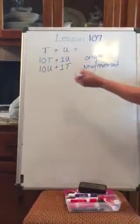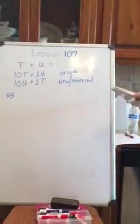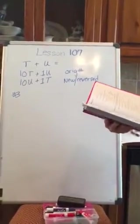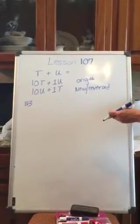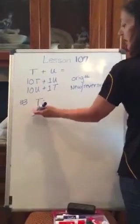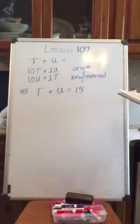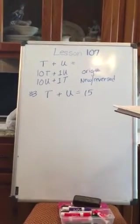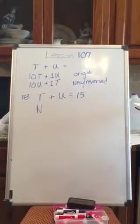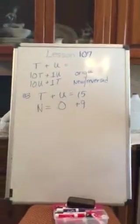So looking at number 3, problem number 3, on page 441. It says the sum of the digits of a two-digit counting number is 13. Actually number 3 says the sum of the digits is 15. So if I add the digit in the tens place to the digit in the units place, it equals 15. And it says that the digits were reversed. The new number, this new number, the new number was 9 greater than the original number.